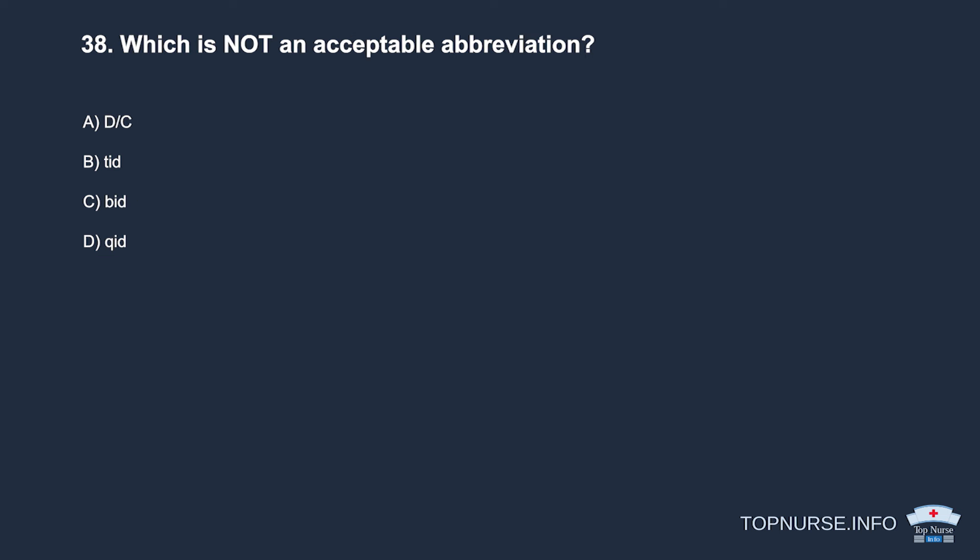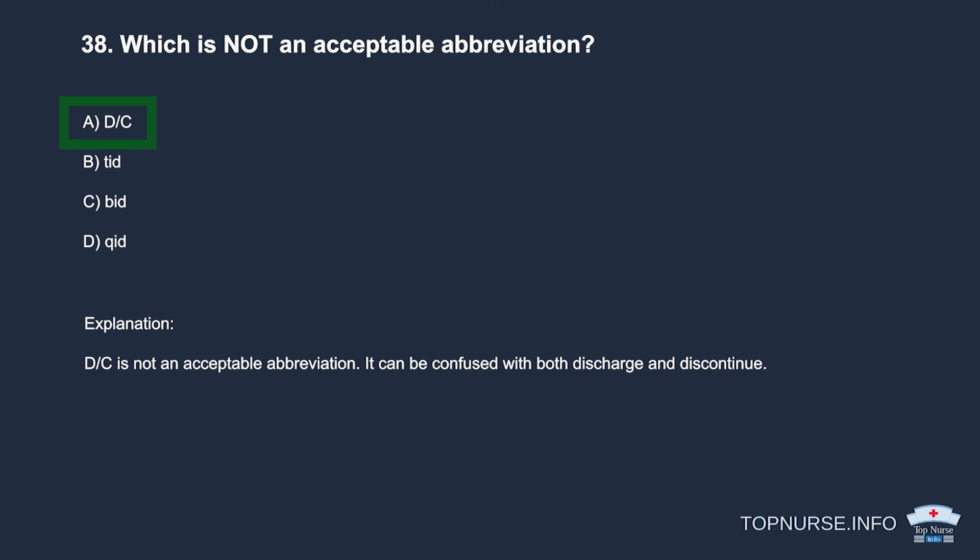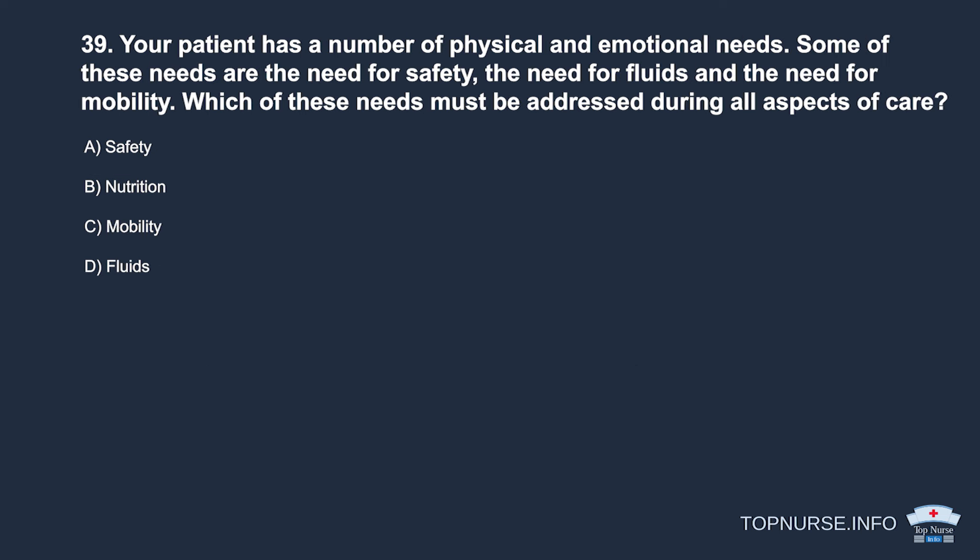Question 38: Which is not an acceptable abbreviation? a. D/C. b. TID. c. BID. d. QI. Correct answer: a. D/C (slash C). D/C is not an acceptable abbreviation because it can be confused with both discharge and discontinue.